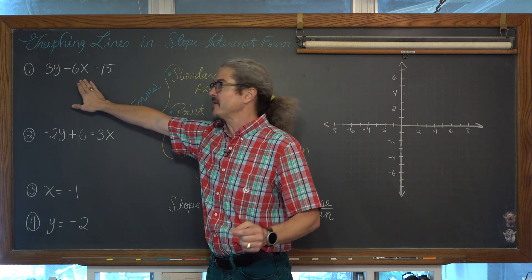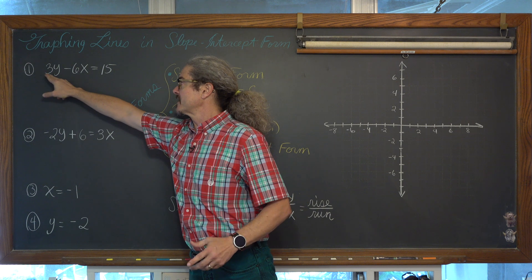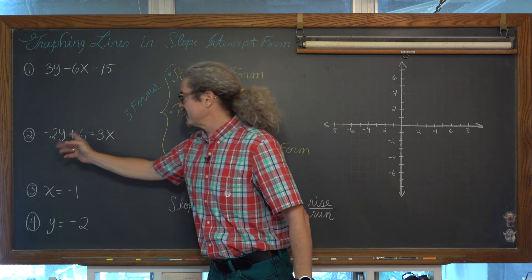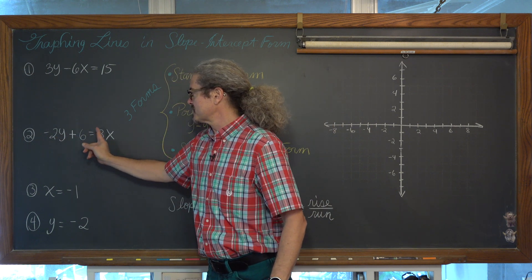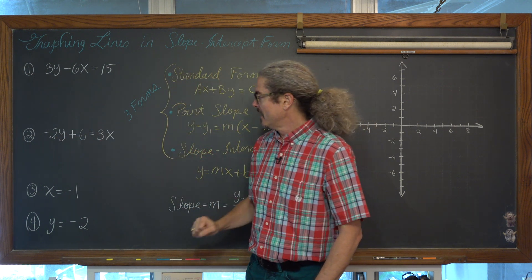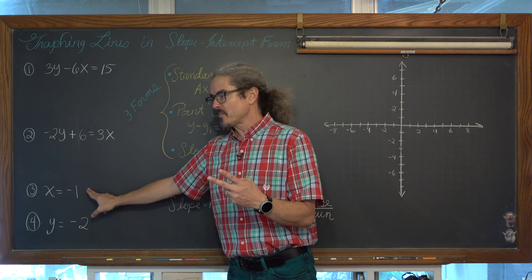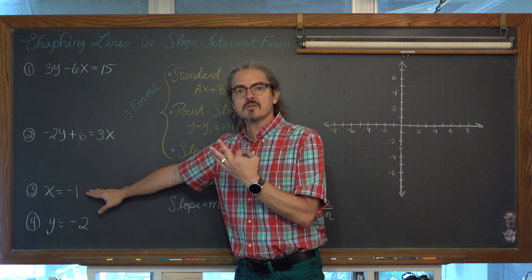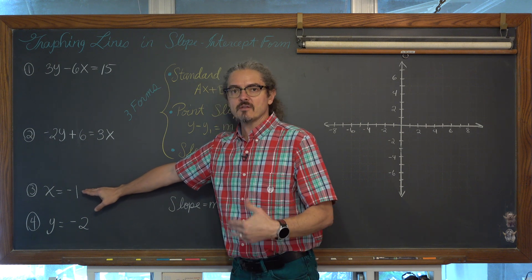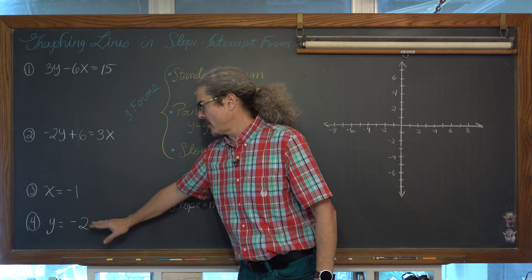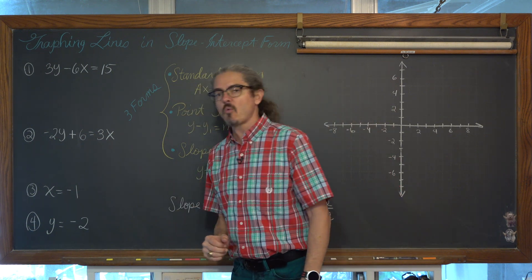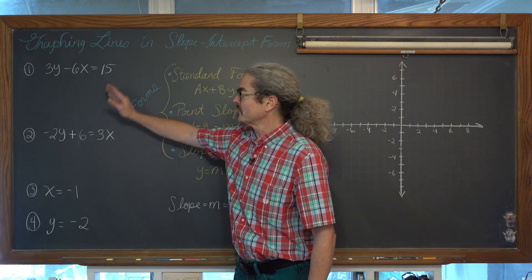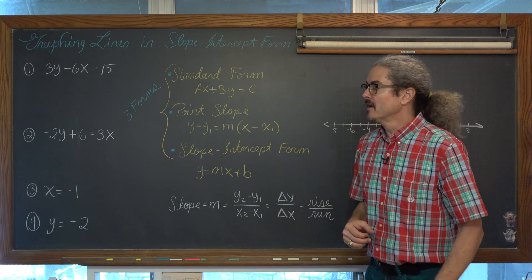Our first example is going to be graphing the line represented by the equation 3y minus 6x is equal to 15. Then we're going to graph the equation negative 2y plus 6 is equal to 3x. Then we're going to look at two other examples that look quite a bit different. The third example only uses the variable x: x is equal to negative 1. And our fourth example only includes the variable y. We'll talk about the differences between examples 3 and 4 and our first two equations.